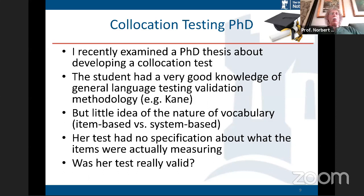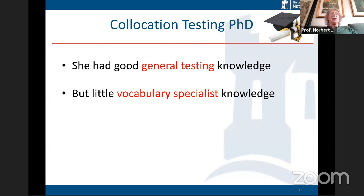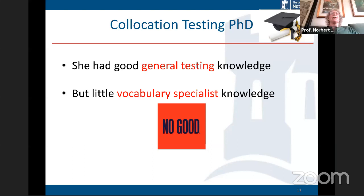Her test had no specification about what the items were measuring. At the end she got a number — say 50 correct — but what does that mean in terms of what students can do with vocabulary? Are they proficient or not? Her test wasn't really valid. She had good testing knowledge but very little vocabulary specialist knowledge, and that was a problem. The opposite is also true: a vocabulary specialist who understands corpora and acquisition but doesn't understand testing — that's no good either.